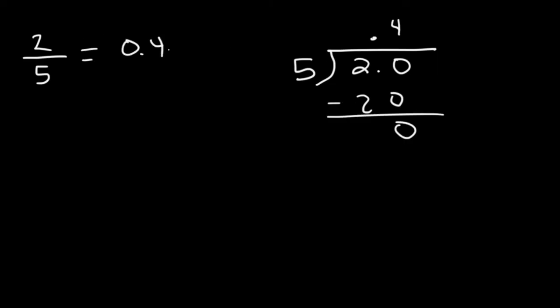Let's try some other examples. Convert 2 over 5 into a decimal. So this is going to be 5 on the outside, 2 on the inside. Let's add a 0. We're going to treat 2.0 as if it's 20. 5 goes into 20 4 times. 20 minus 20 is 0, and that's it. 2 over 5 is equivalent to 0.4.